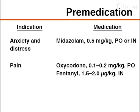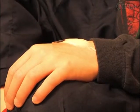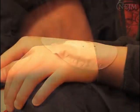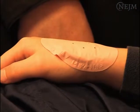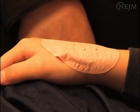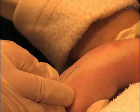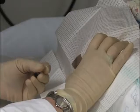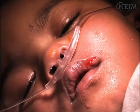For distress, oral or intranasal midazolam is a common choice. For pain, oral oxycodone or intranasal fentanyl. The use of a topical anesthetic to minimize procedural sensations is an essential component of procedural sedation in children and is useful before intravenous catheter placement, lumbar puncture, and laceration repair.